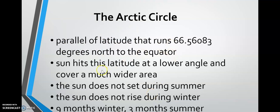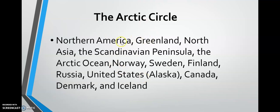The arctic circle is a parallel of latitude that runs at 66.56 degrees north of the equator. The sun heats this latitude at a lower angle and covers a much wider area. The sun does not set during summer — which might seem very hot, but because it hits at a lower angle it covers a wider area, resulting in lower temperatures. The sun does not rise during winter, making it very cold. The arctic circle typically has nine months of winter and three months of summer.